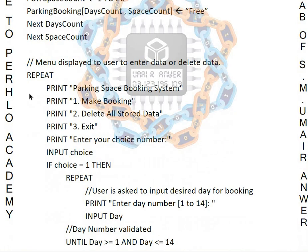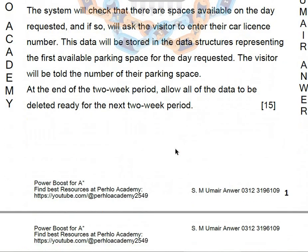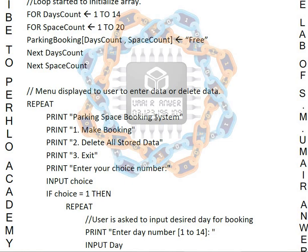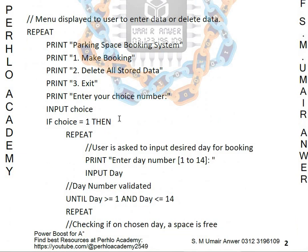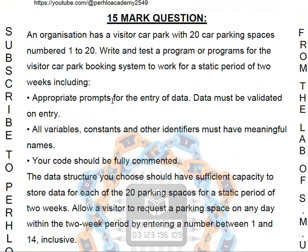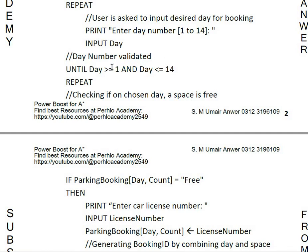For the menu display, we use a repeat loop. We print: option 1 — make booking; option 2 — delete all stored data (as asked in the question, at the end of 14 days you should be able to delete all data ready for the next two-week period); option 3 — quit. The user enters their choice. The user can input a day number from 1 to 14, which is validated because the question requires all data to be validated on entry.